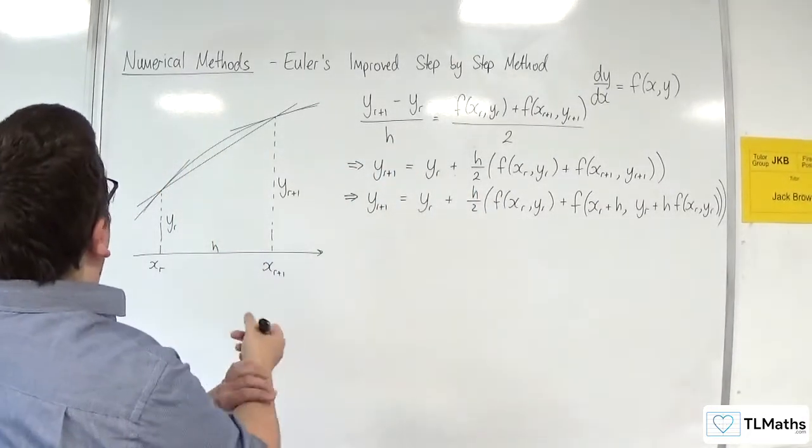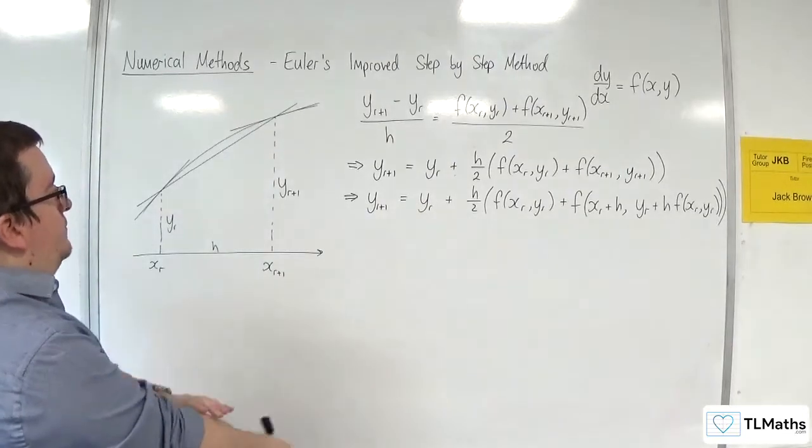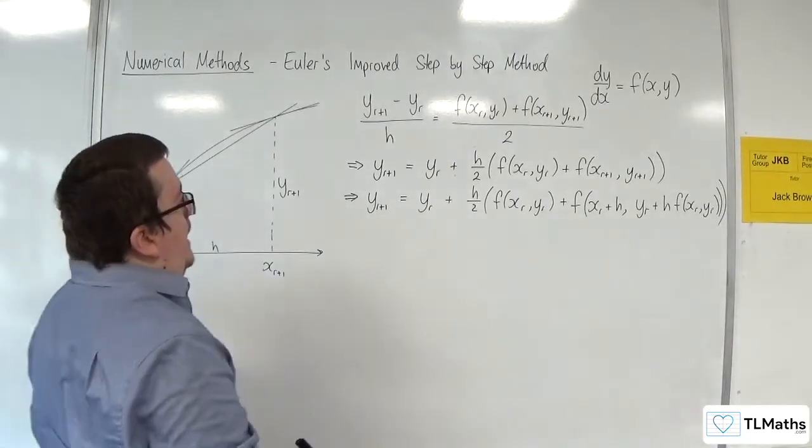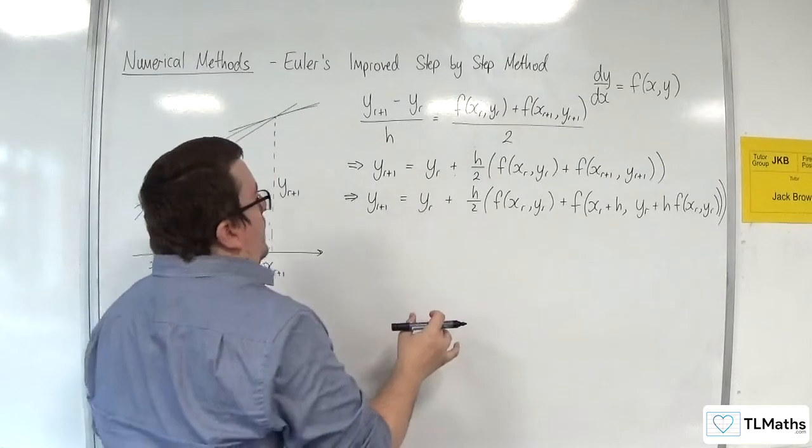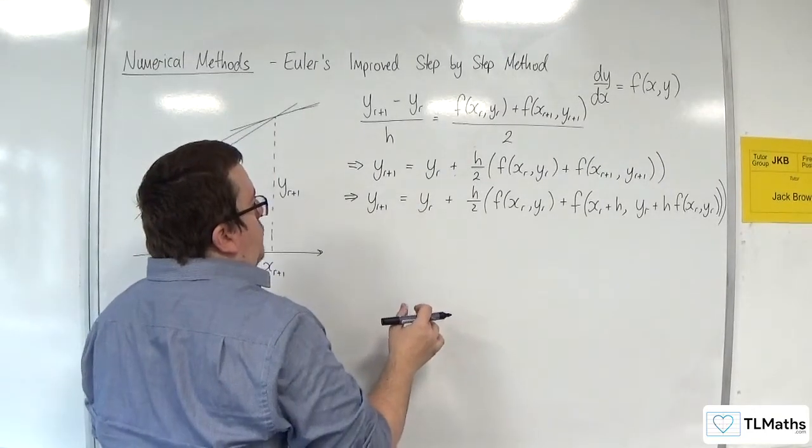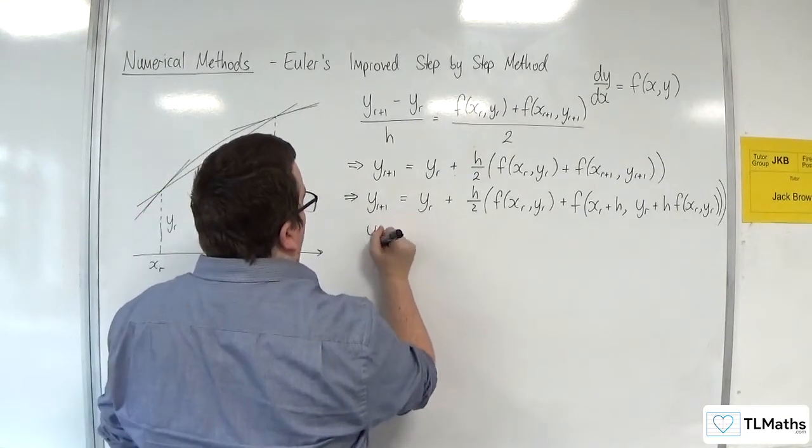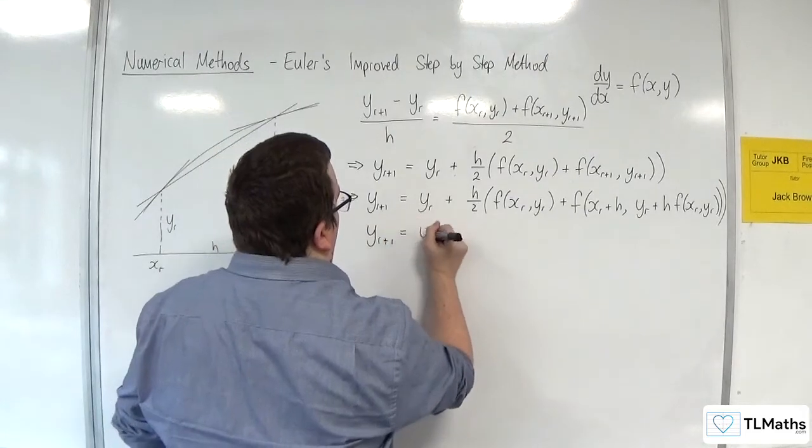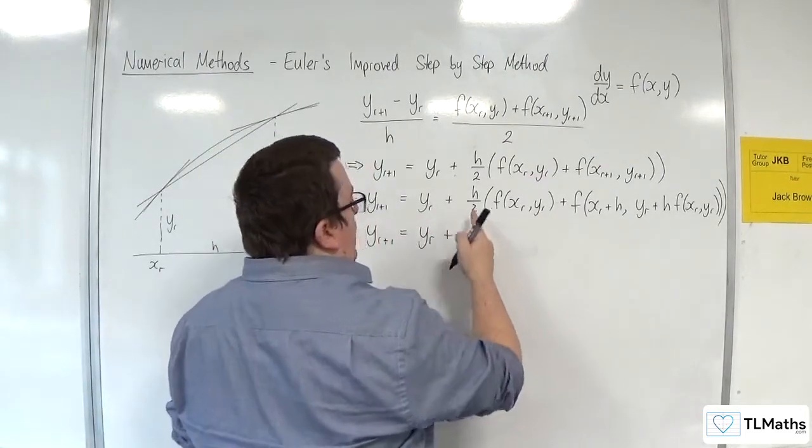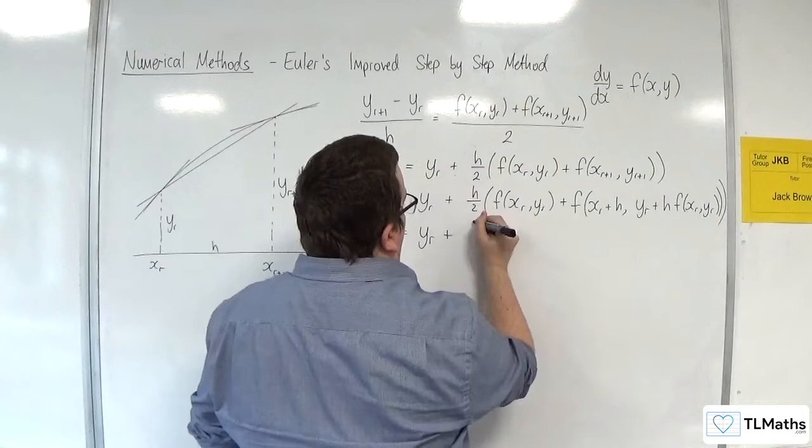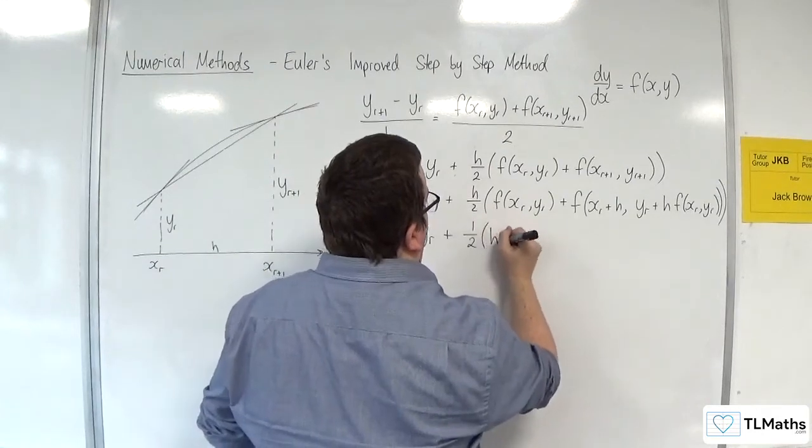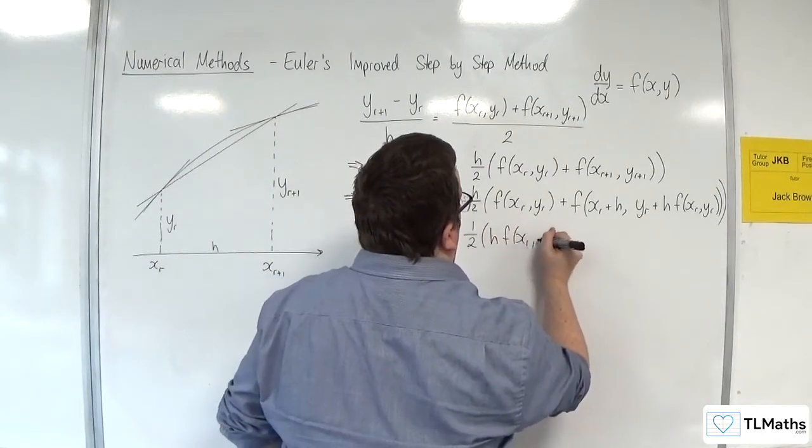So, currently, this is looking not very nice. Now, what I can do is I can rewrite this. Now, I'm going to bring that H back in now. So, I'm going to have it as 1 half times H, F, XR, YR.